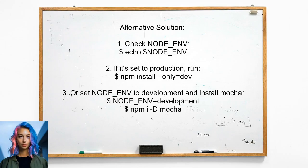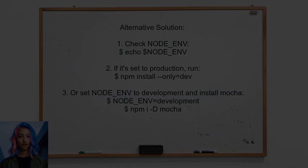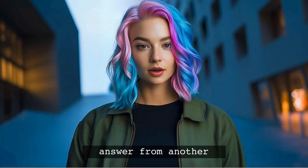Another alternative solution suggests checking your NODE_ENV variable if you're using Windows and Git Bash. It may default to production, which prevents npm from installing dev dependencies like Mocha.